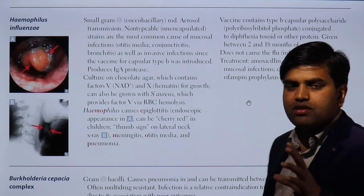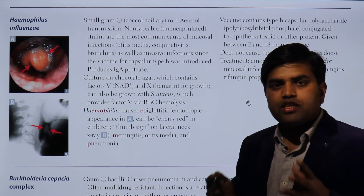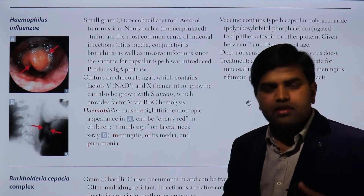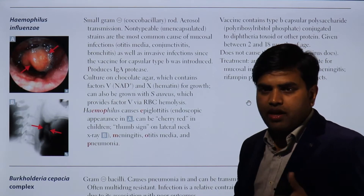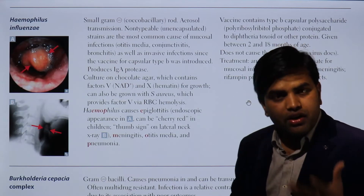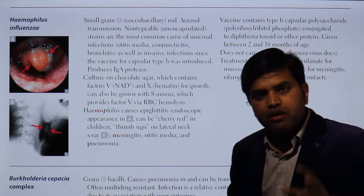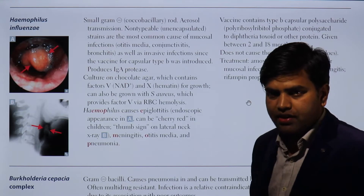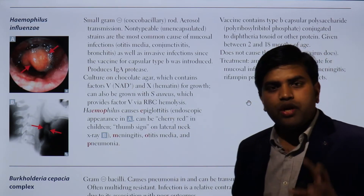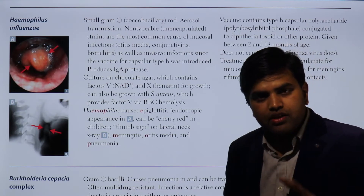Haemophilus influenzae is a fastidious organism, meaning it requires special conditions for growth. It cannot be grown on nutrient agar, Muller-Hinton agar, or blood agar. It can only grow on media containing both X factor (hemin) and V factor (NAD). Both factors are required and are present only in chocolate agar.